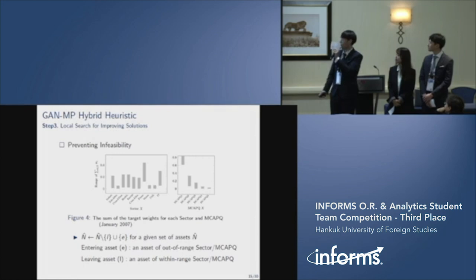During our test, we realized that infeasibility occurs due to constraints 6 and 7 in some cases. This bar graph shows the sum of the target weight for each sector and MCAPQ. We can see the range of sector and MCAPQ are restricted. Our selected assets range of sector and MCAPQ could not be satisfied in some cases. To consider the situation, an asset out of our range is entered, and an asset within range is swapped in our local search.